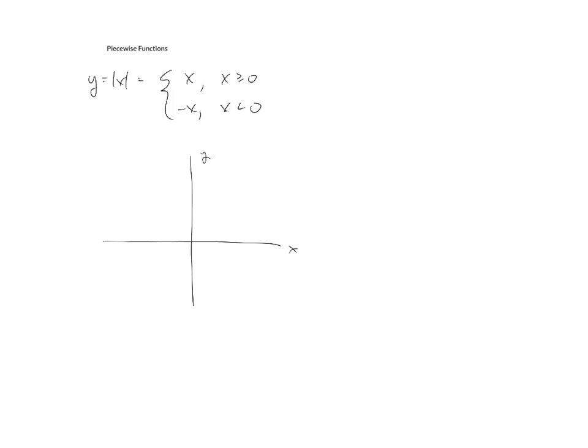The first part would be y equals x. Well, y equals x is just the diagonal line through the point zero, zero with a positive one for slope. But now we don't want all of this. We only want this graph when x is bigger or equal to zero. So I would then need to come back and erase this part right here.